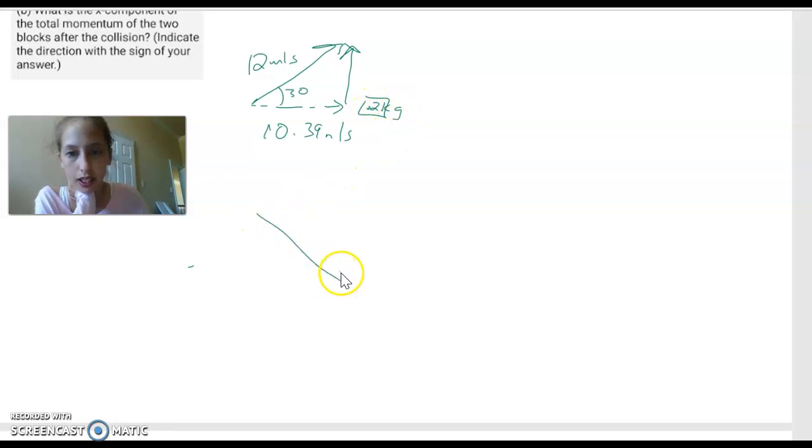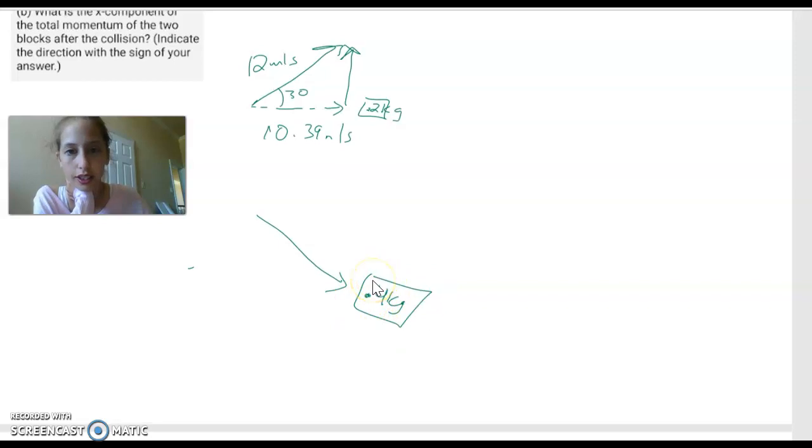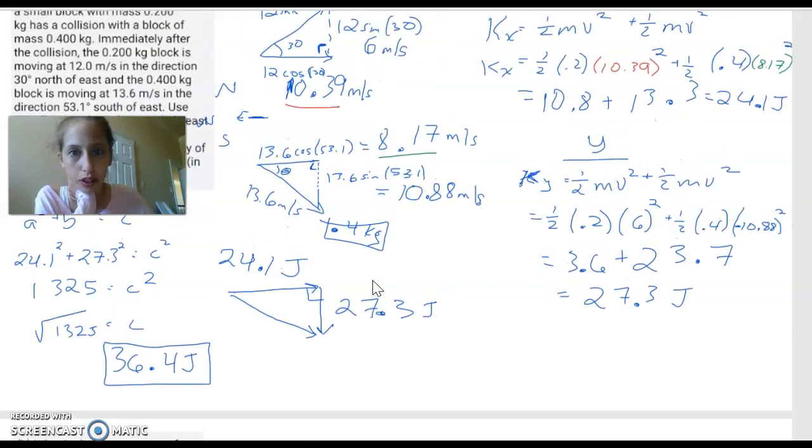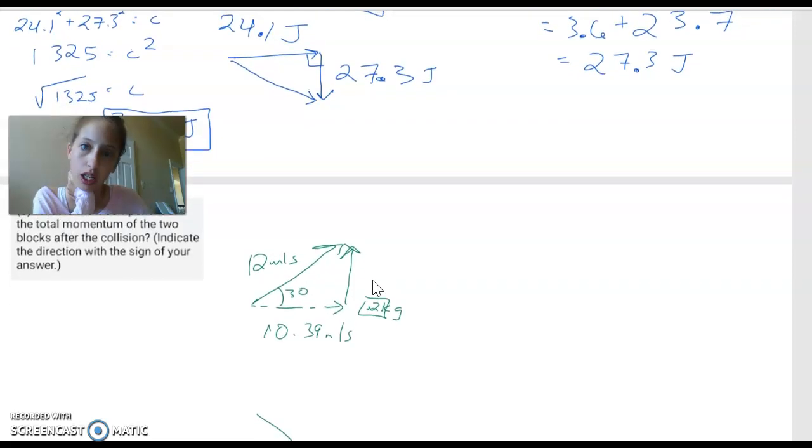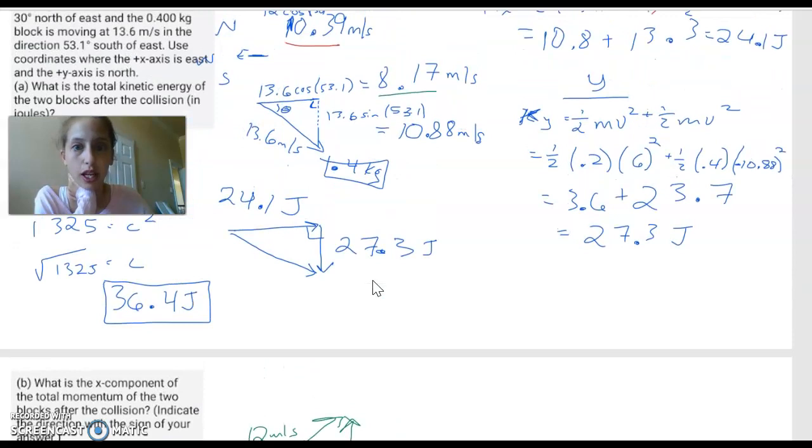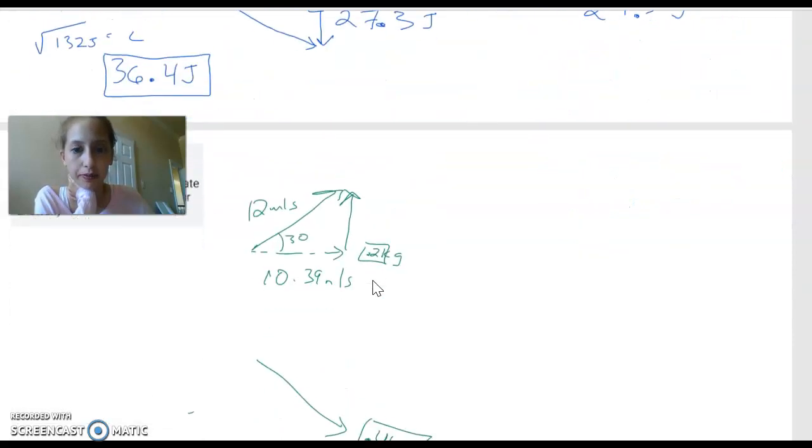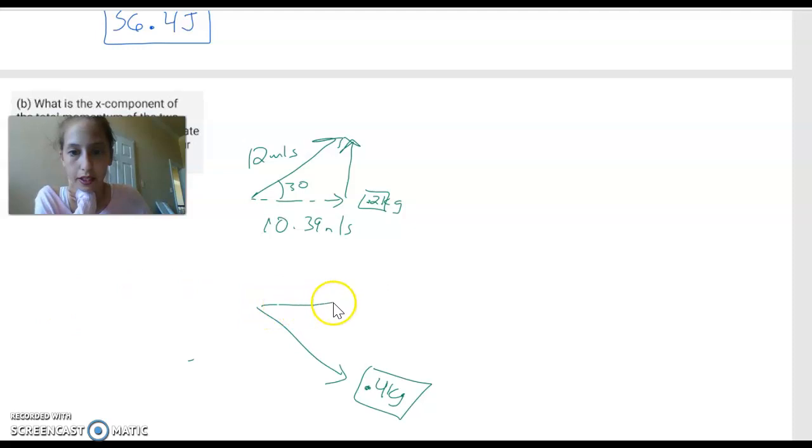And then the other box was down like this and it was 0.4 kilograms. I don't remember what that was. 10.39, double checking. Okay, 24.1... No, that's the joules. 8.17. Okay. Are you ready to see how easy this is? Okay. X component of the total momentum.